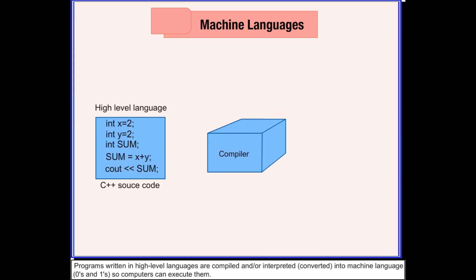Programs written in high-level languages are compiled and or interpreted, that is converted into machine language that is zeros and ones, so computers can execute them.